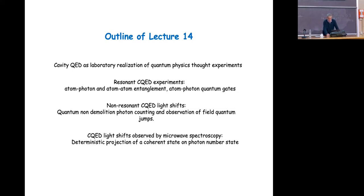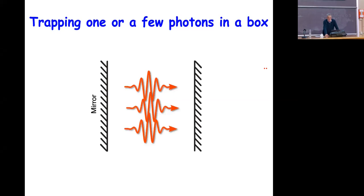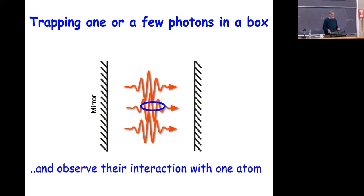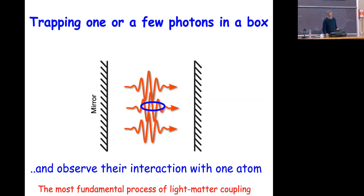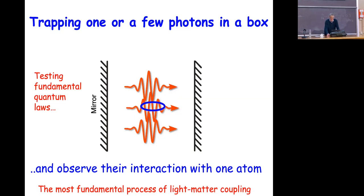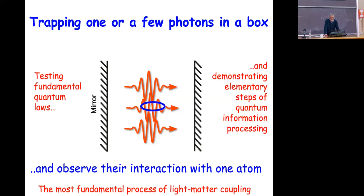The principle of the experiment was already discussed: we have two mirrors facing each other, and photons are bouncing from one mirror to the other many many times. We study what happens when there is one atom inside this cavity, and we observe the interaction of one atom with one or a few photons. This is of course the most fundamental process of light-matter coupling — we take the smallest element of matter, which is an atom, and the smallest element of light, which is a single quantum of light, a photon. We test fundamental quantum laws, and as you will see we can demonstrate elementary steps of quantum information processing.